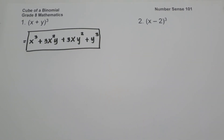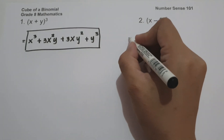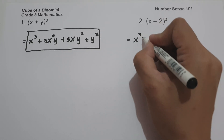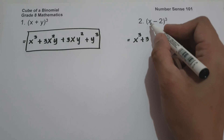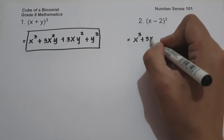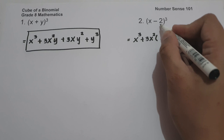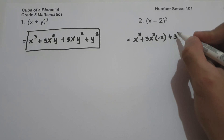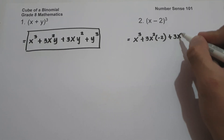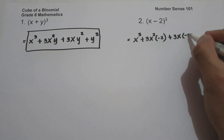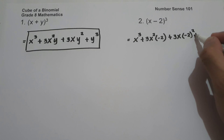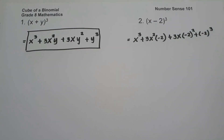On Example 2, we have the quantity (x − 2) raised to 3. First, the cube of the first term is x raised to 3, plus 3 — a constant — multiplied by the square of the first term x² multiplied by the second term, which is negative 2. To find the third term, we have 3 times the first term multiplied by negative 2 raised to 2.